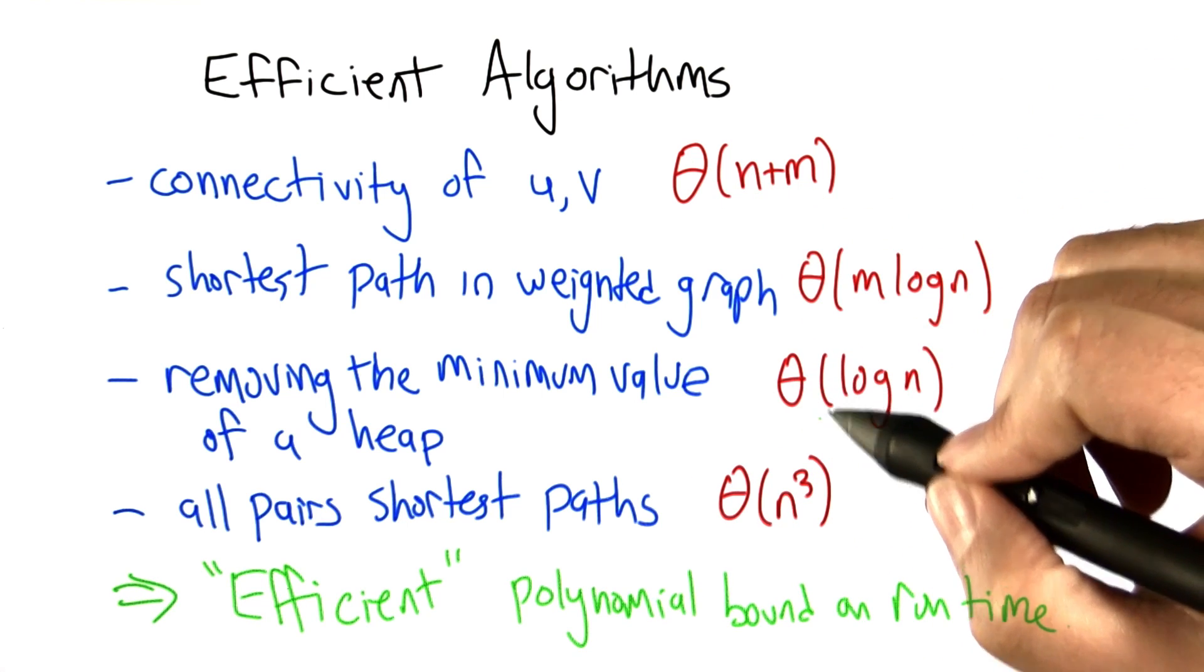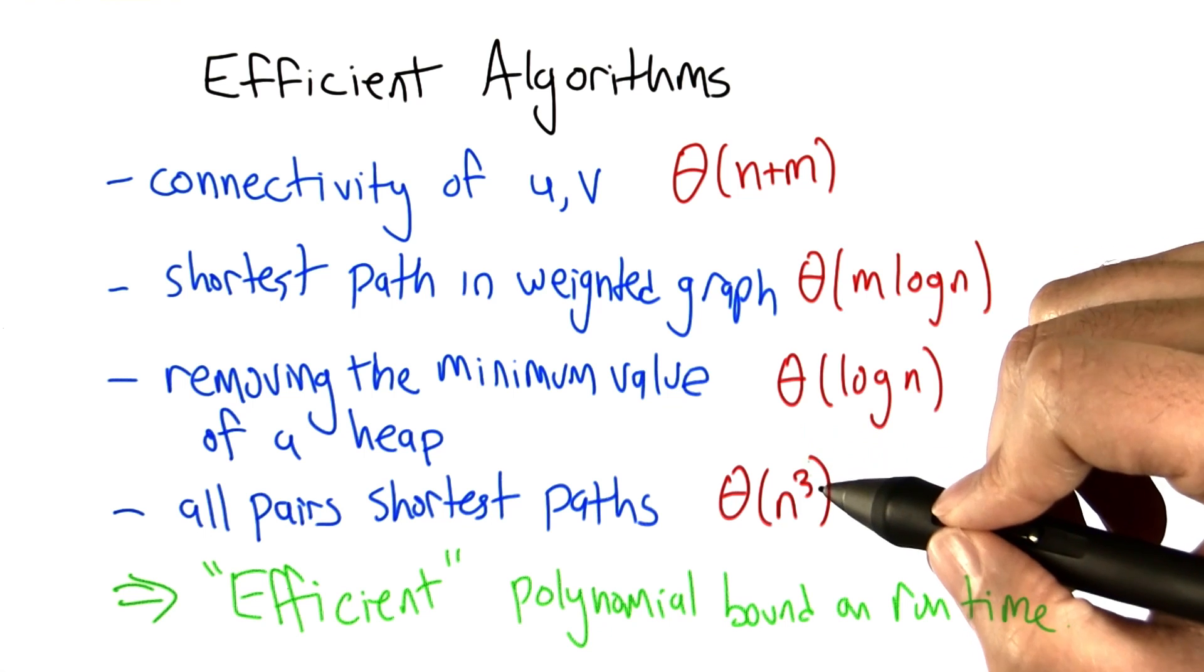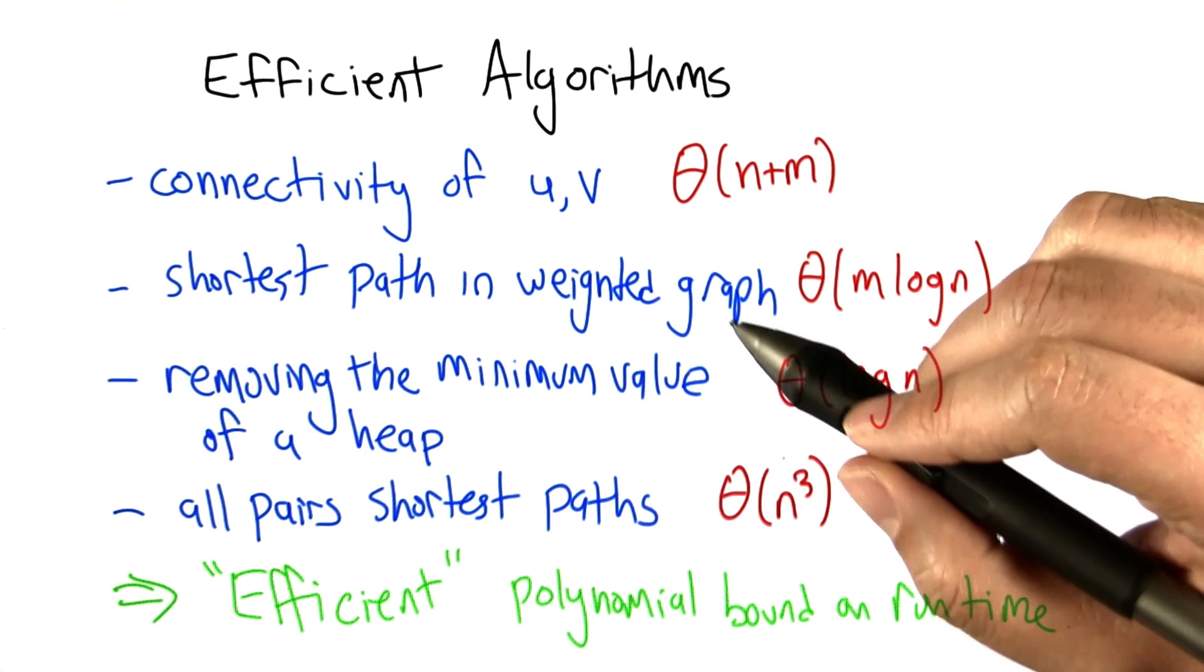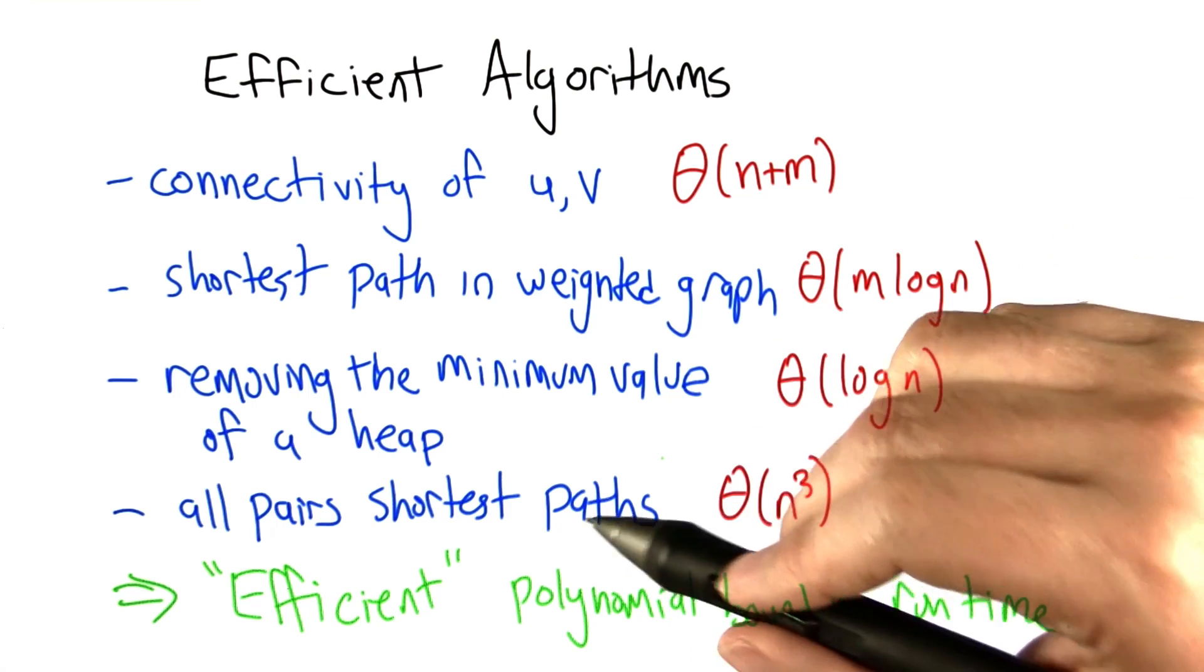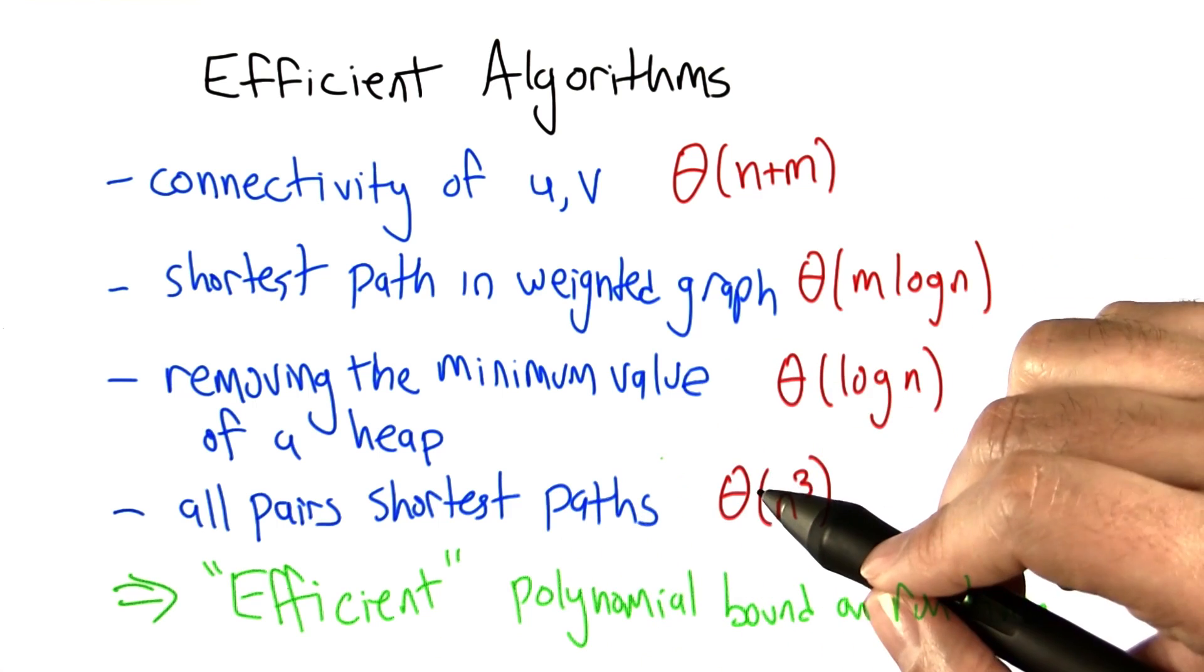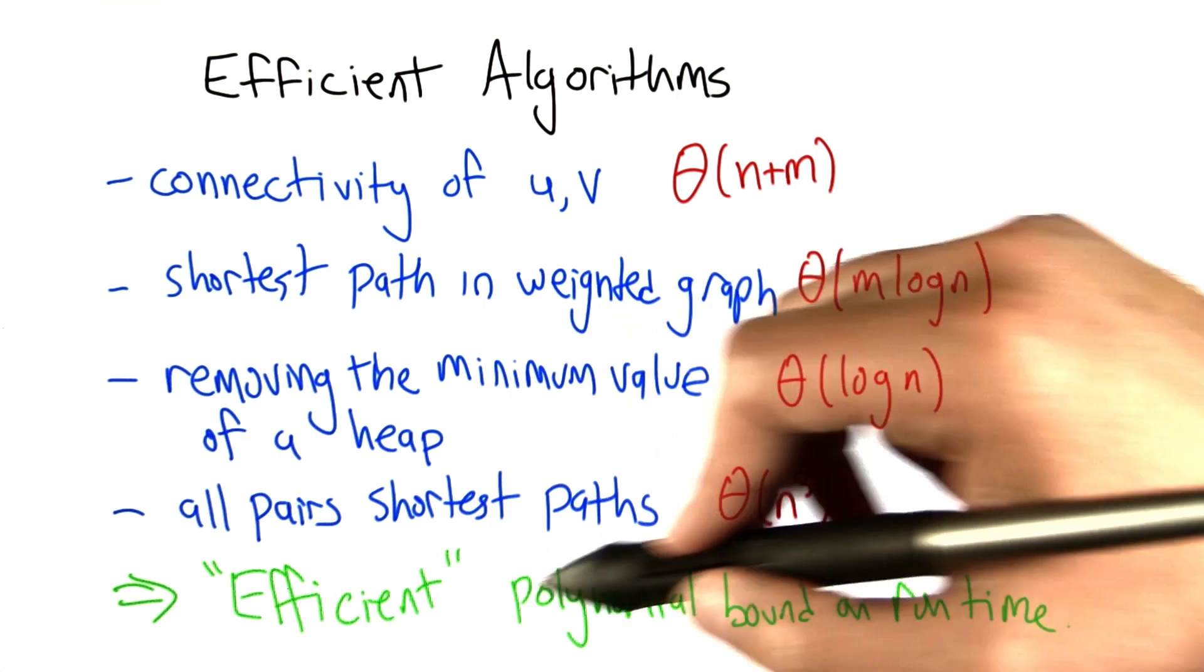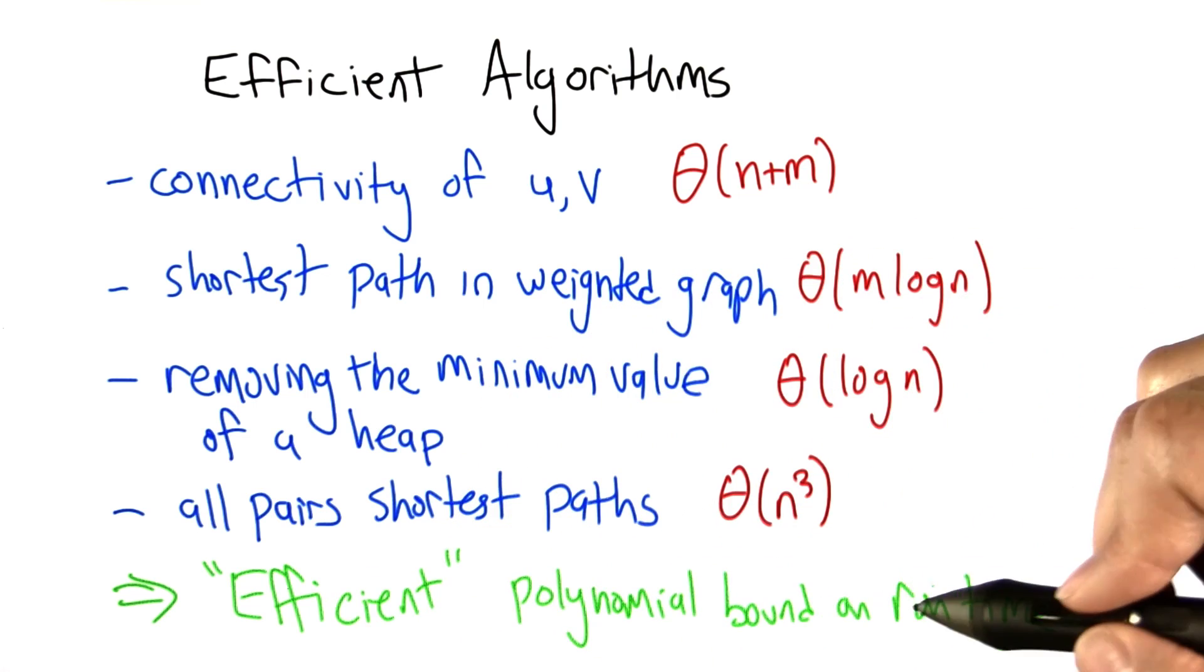By and large, the algorithms that we can actually solve in a reasonable amount of time all seem to be in this category of having a polynomial bound. That has led theoreticians to at least define efficient in one particular way. That is, an algorithm is efficient if it has a polynomial bound on its running time.